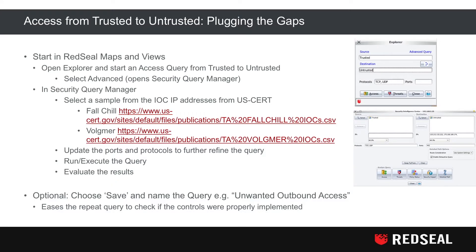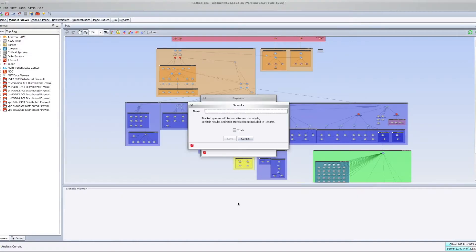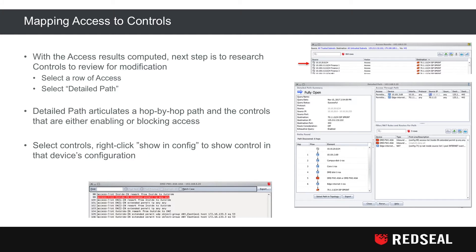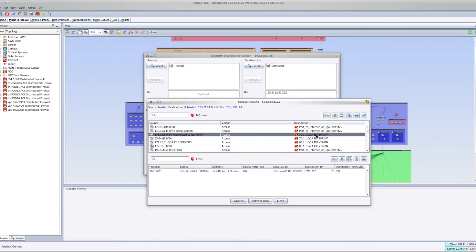In the screenshots displayed here, we see TCP/UDP 443 and two of the suspect servers. Optionally, you can choose Save and name the query 'unwanted outbound access.' This will ease the repeat query to check if your controls were properly implemented.